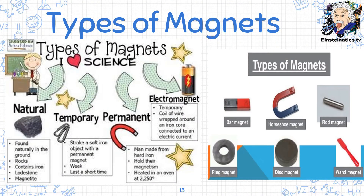There are several types of magnets. The first is natural magnets — found naturally in the ground, referring to rocks containing iron, lodestone, and magnetite. We also have temporary magnets, produced by stroking a soft iron object with a permanent magnet; these are weak and only last a short time. The third type is permanent magnets, which are man-made and hold their magnetism when heated in an oven at 2250 degrees Celsius. Another type is the electromagnet, which is only temporary — as long as there is a current, there is magnetism.